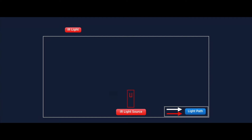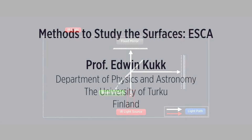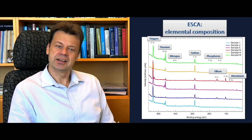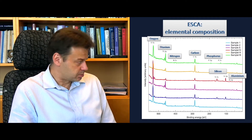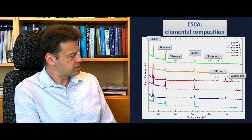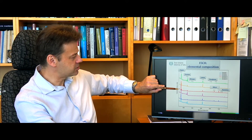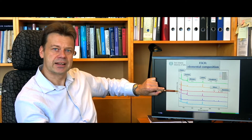Spectroscopy itself is essentially the interaction of specific wavelengths of light with matter. The material here is titanium. Here is a series of spectra — these lines or curves are called electron spectra, and the axis here is labeled binding energy.